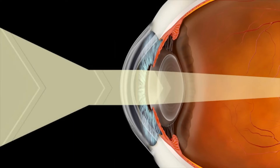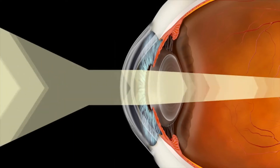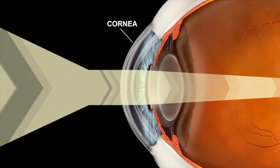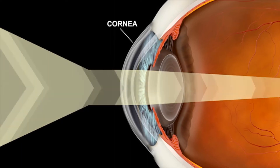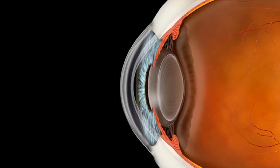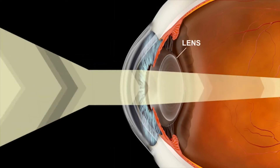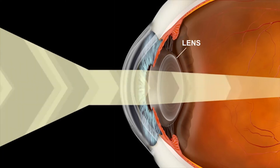Light enters your eye through two curved surfaces. First, it passes through the cornea, where most of the focusing occurs. Next is the lens, where the light is slightly adjusted to focus on the retina.